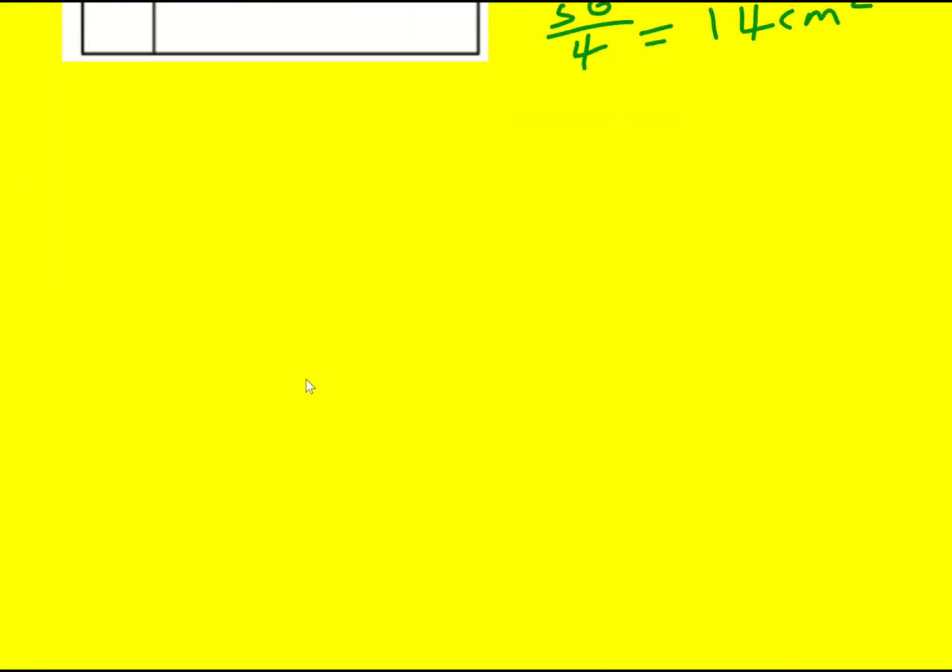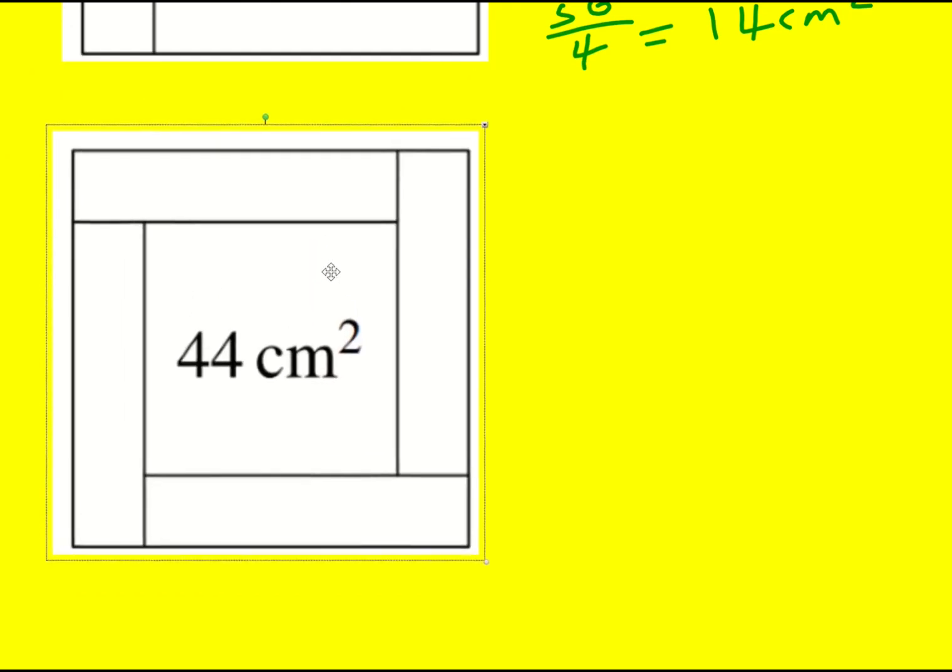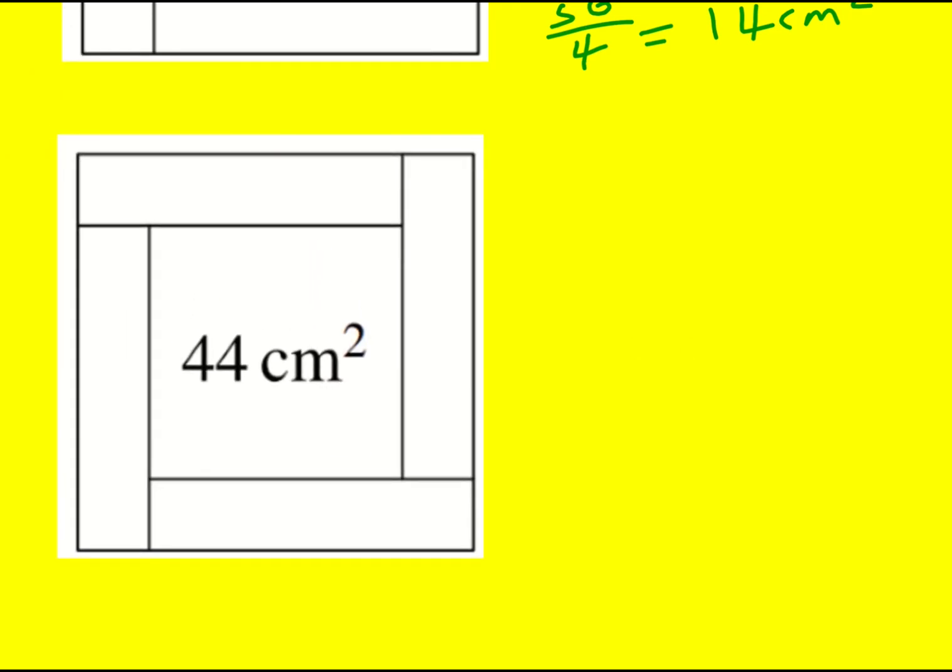Okay, method two. This is going to assume that you've done certain topics which are actually normally taught after the junior maths challenge, but you might have covered them. It's actually how I did it, so I'm just going to talk through it.